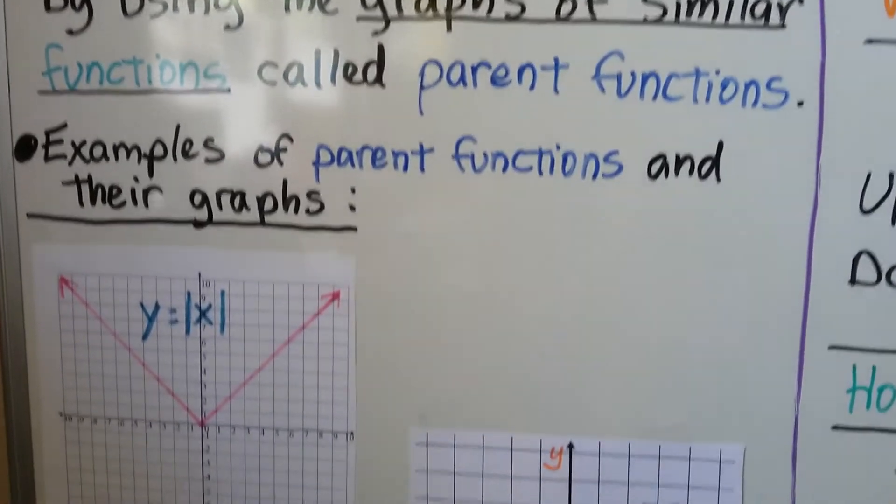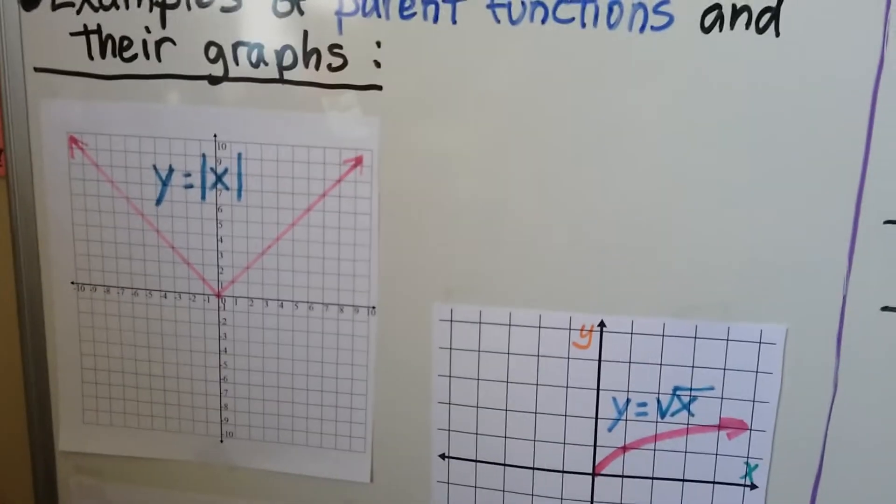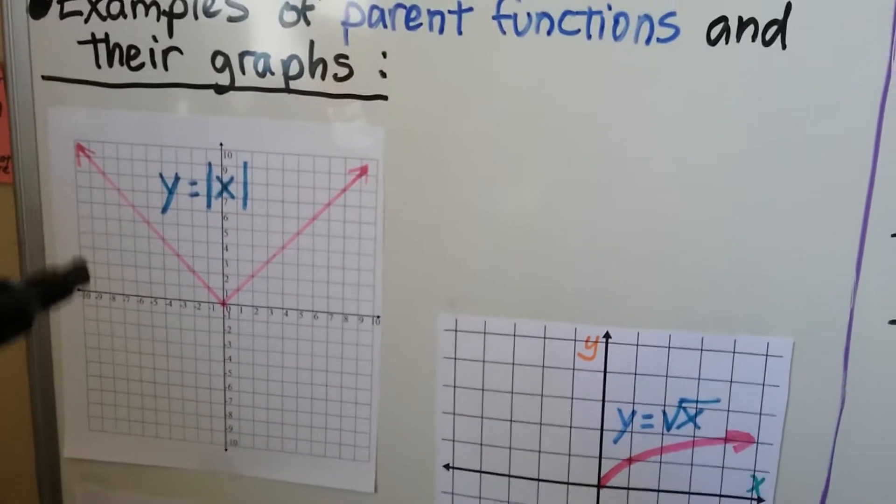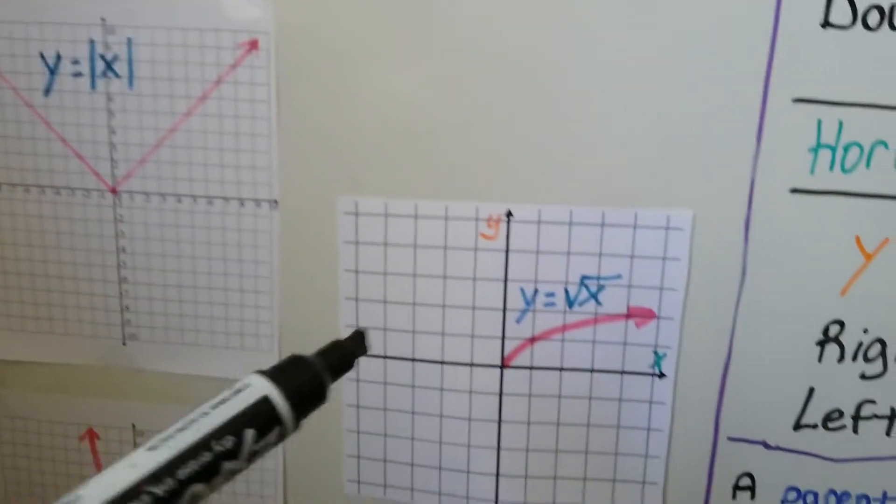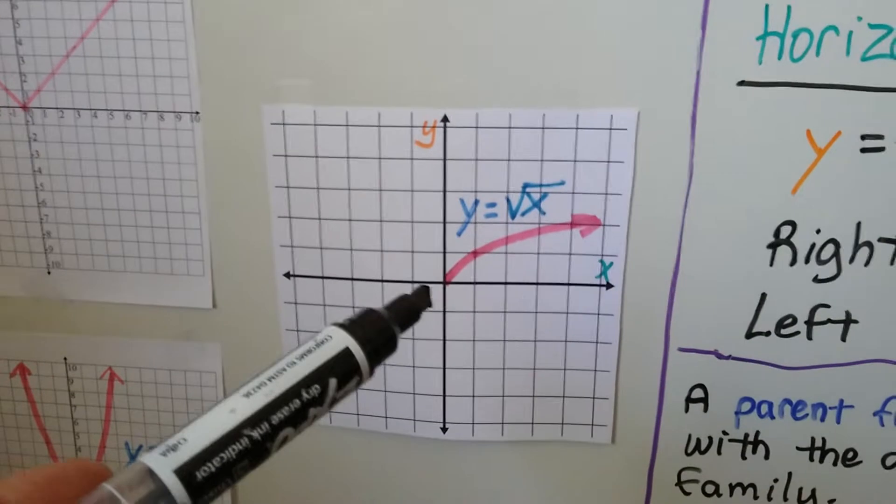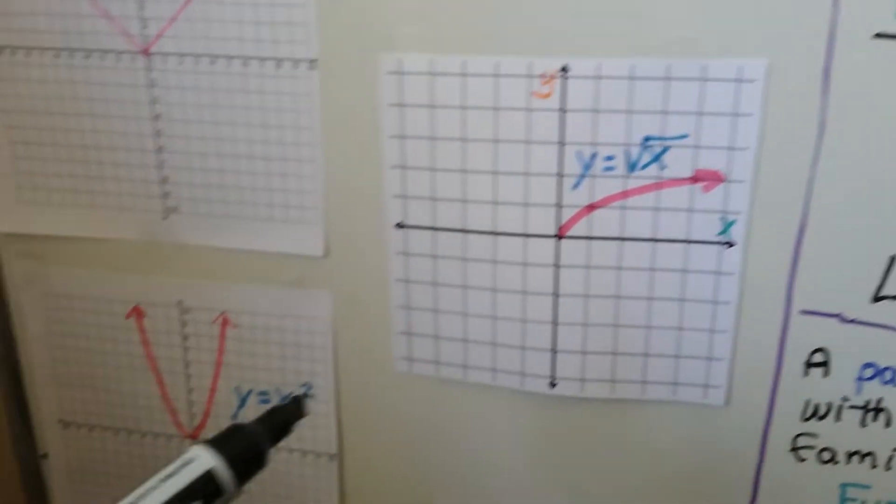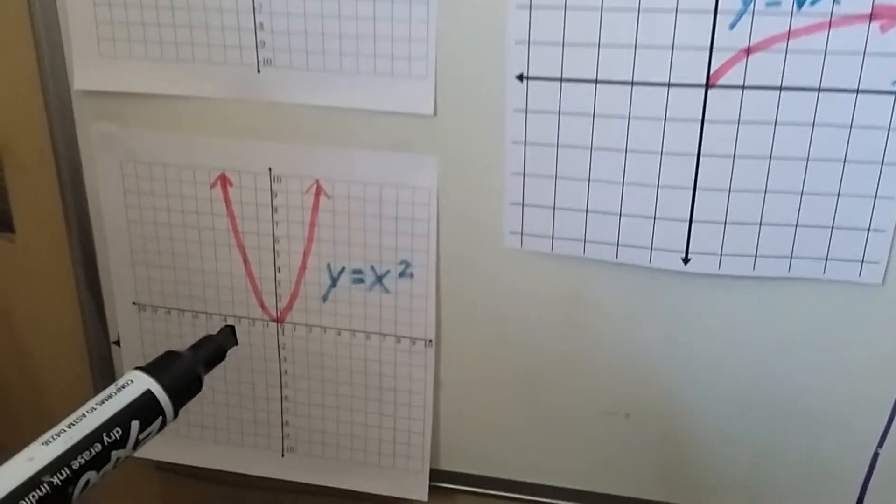Here are some examples of parent functions and their graphs. So here is y equals the absolute value of x. Here is y equals the square root of x. And here is y equals x squared.